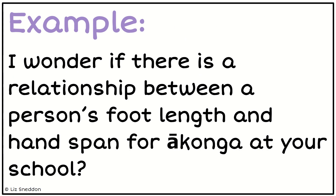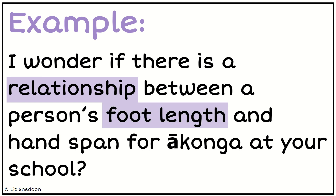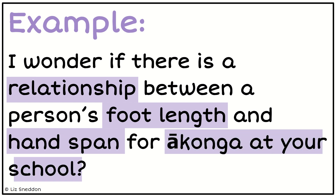So here's an example: 'I wonder if there is a relationship' — got that word 'relationship' there — between a person's foot length, so their foot length is one of the numeric variables, and handspan, that's my second numeric variable, for Akonga at your school. So that would be an investigation question that has all the different components we need in it.